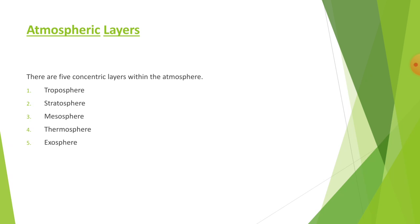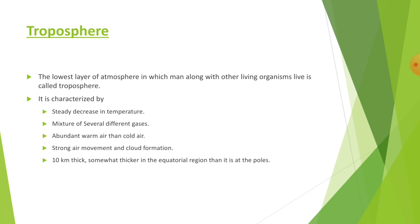There are five concentric layers within the atmosphere, differentiated on the basis of temperature: troposphere, stratosphere, mesosphere, thermosphere, and exosphere. The troposphere is the lowest layer of the atmosphere in which humans along with other living organisms live. The troposphere is roughly 10 kilometers thick, being somewhat thicker in the equatorial region than at the poles.